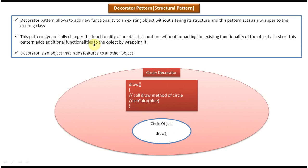In short, this pattern adds additional functionality to an object by wrapping it — the circle object will draw only a circle without color, but using circle decorator we are adding some color to the circle object. The third explanation: decorator is an object that adds features to another object — so this circle decorator adds additional features to the existing circle object. That is the Decorator Design Pattern introduction.